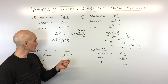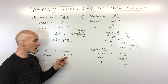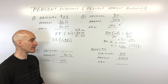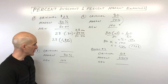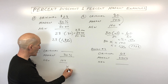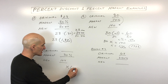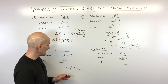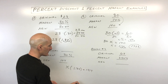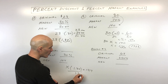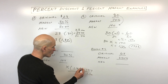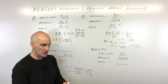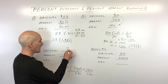Example three for markup is a little different — we're finding the original amount. The markup percentage is 30% and the new amount is $104. Using method two: X times 1.30 equals 104, because the customer pays 130% (the original 100% plus 30% markup). Divide both sides by 1.30: 104 divided by 1.30 equals $80, and that's our original amount.